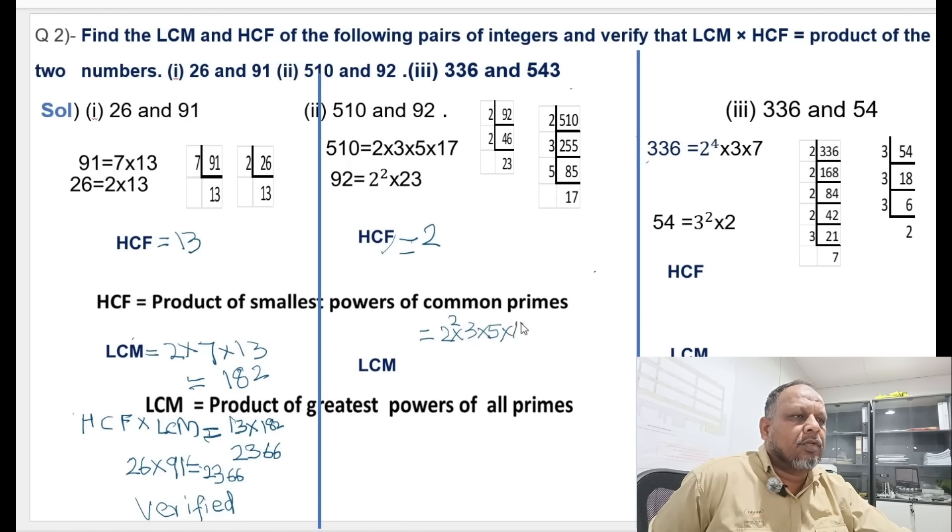2 square is 4, 4 times 3 is 12, 12 times 5 is 60, 60 multiplied by 17 is 1,020, multiplied by 23 is 23,460. That is LCM.